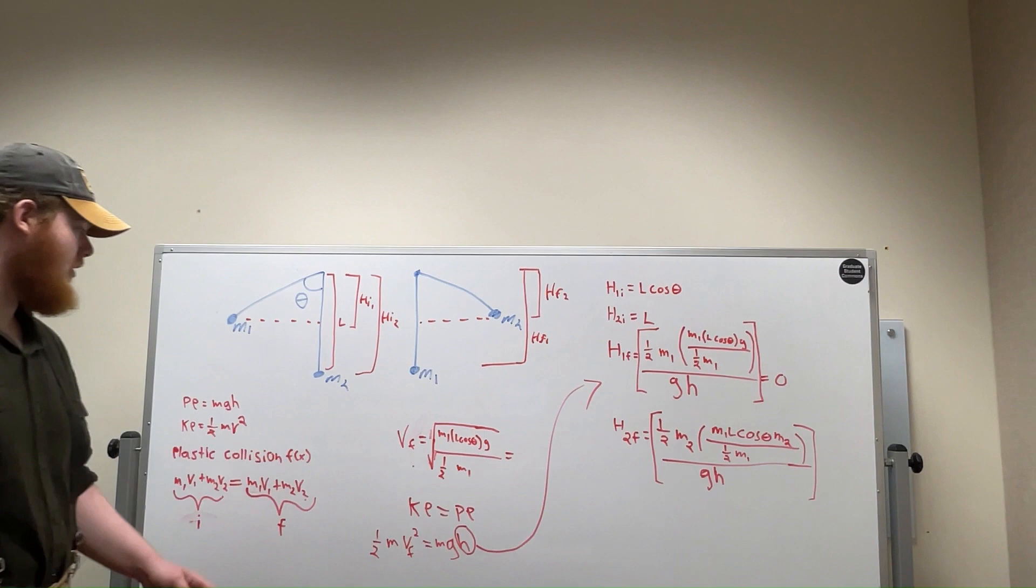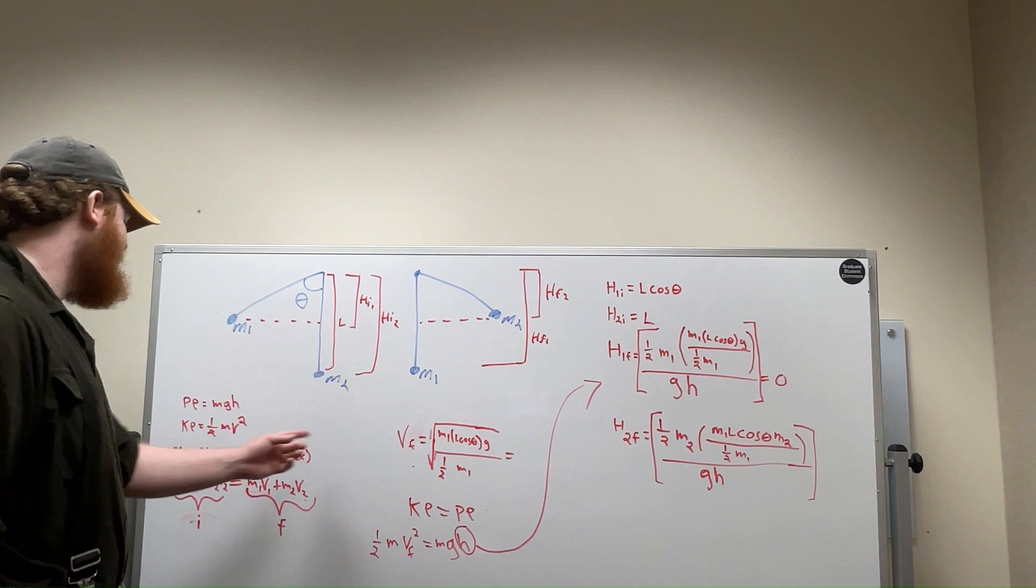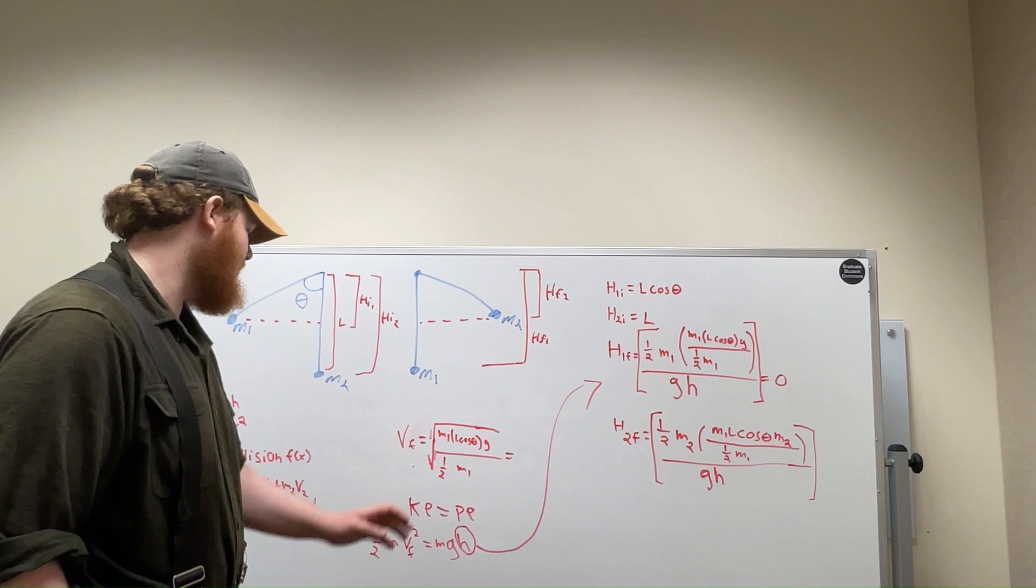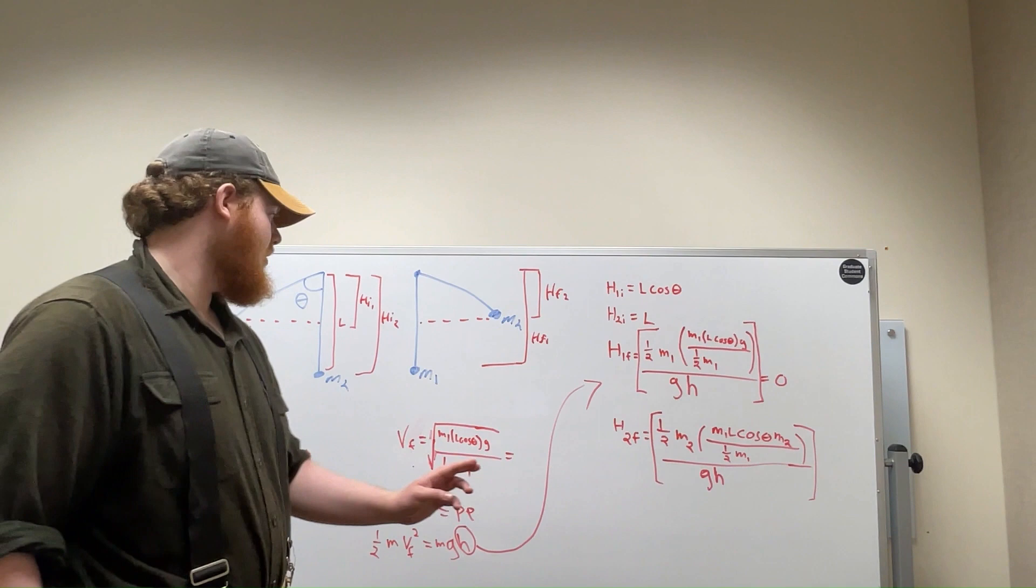In order to find the height, we first need to get the velocity. We found the velocity by making potential energy equal to kinetic energy. We then solve for V. This is our V final. V final is equal to the square root of M1 times L cosine theta G over 1/2 M1. And L cosine theta comes from the initial H1.